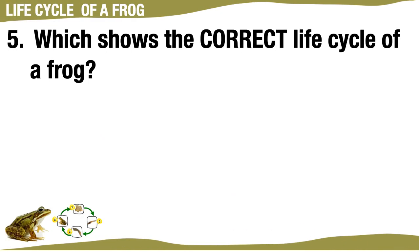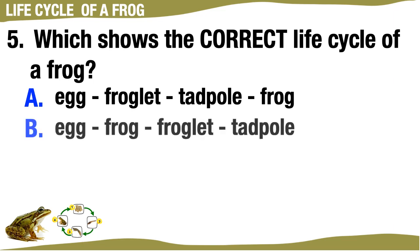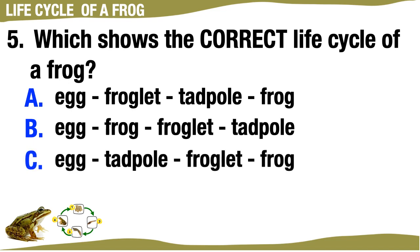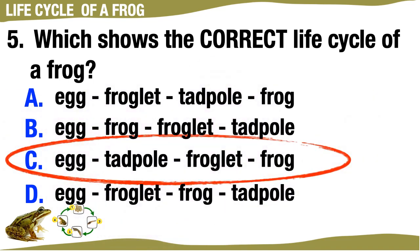Which shows the correct life cycle of a frog? A. Egg, Froglet, Tadpole, Frog. B. Egg, Frog, Froglet, Tadpole. C. Egg, Tadpole, Froglet, Frog. D. Egg, Froglet, Frog, Tadpole. The correct answer is C: Egg, Tadpole, Froglet, Frog.